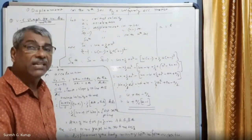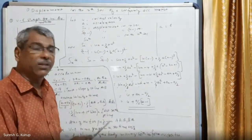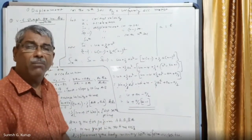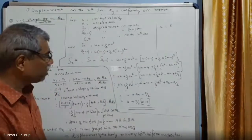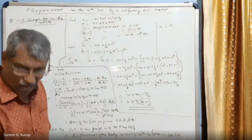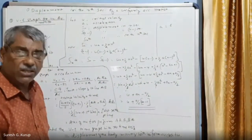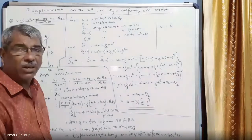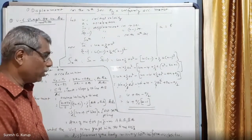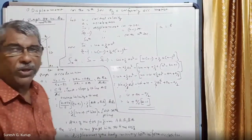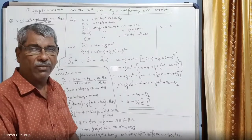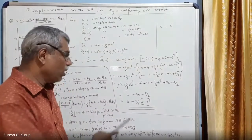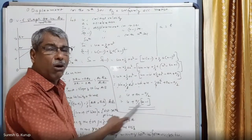In terms of t also, you can write S_t — displacement in the last t-th second — equals u + (a/2)(2t - 1). So you can write n and t both as time. This is a very important expression. In summary, the four derivations we have done are: v = u + at, s = ut + ½at², v² = u² + 2as, and S_n = u + (a/2)(2n - 1).